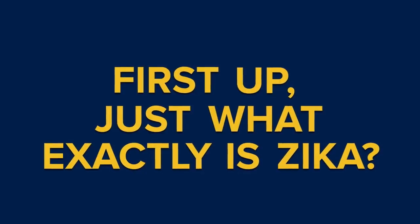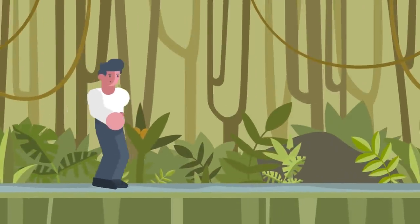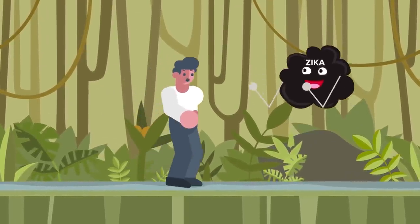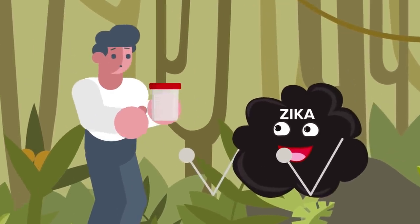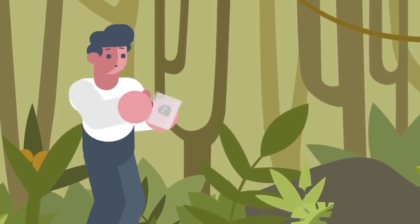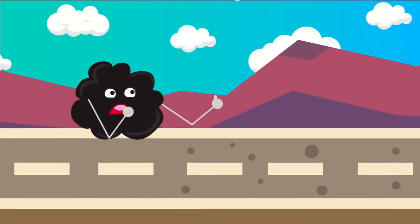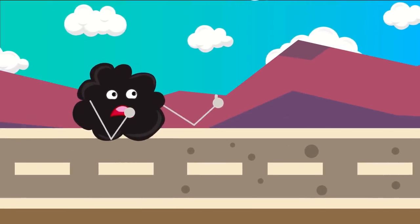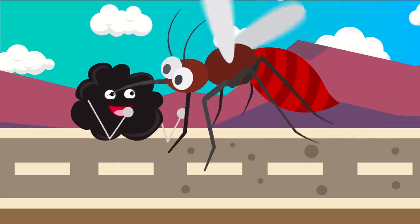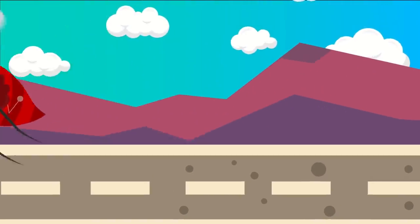First up, just what exactly is Zika? Well, Zika is a viral disease named after the Zika forest in Uganda, where the virus was first discovered and isolated in 1947. The virus is a member of the Flaviviridae family and is spread by day-active mosquitoes such as A. aegypti and A. albopictus.